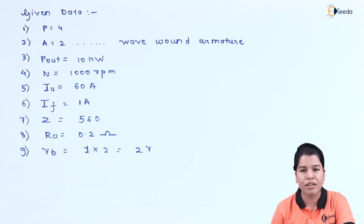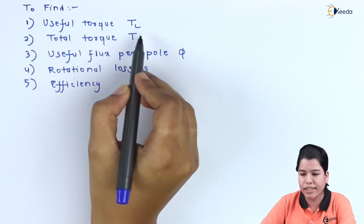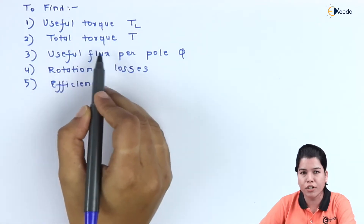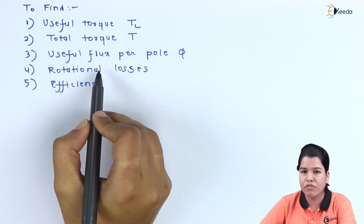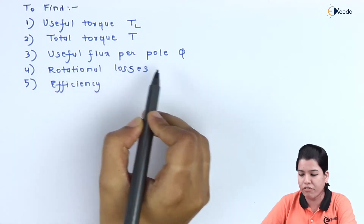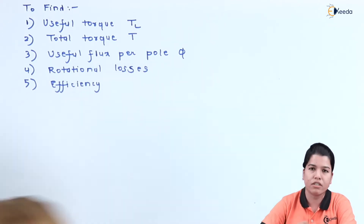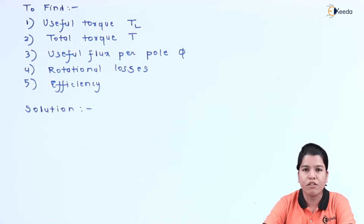Now let us see what we have to find in this problem. First, useful torque T_L. Second, total torque T. Third, useful flux per pole phi. Fourth, rotational losses. Fifth, efficiency.